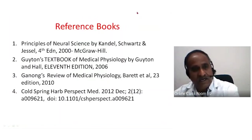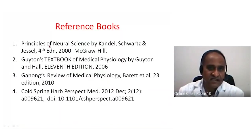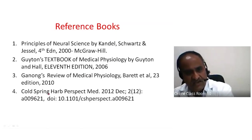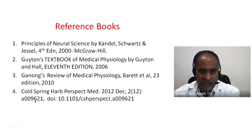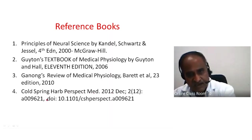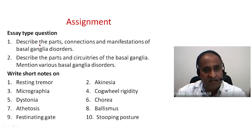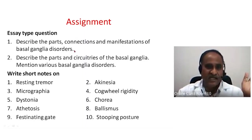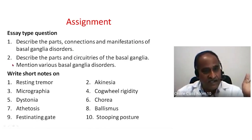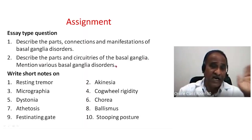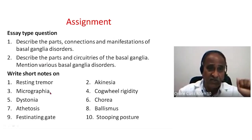The reference books are Kandel's Neuroscience, the Ganong's textbook of physiology, Guyton's physiology, and Cold Spring Harbor Perspectives in Medicine on basal ganglia disorders. The assignment: describe the parts, connections, and manifestations of the basal ganglia disorders — or alternatively, describe the parts, circuitries, and various basal ganglia disorders.